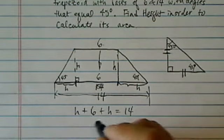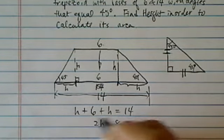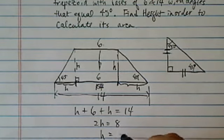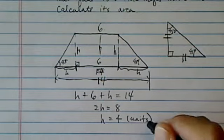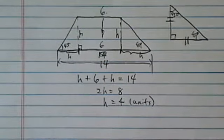And from there, you can see that 2h is equal to 8, or minus 6 on both sides, so height is equal to 4. Since we're not given whatever the unit is, let's say 4 units.